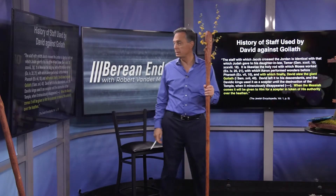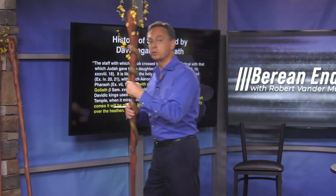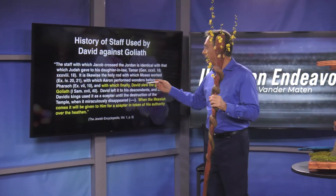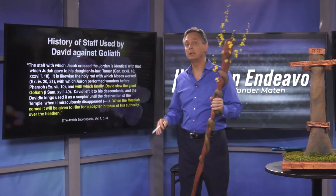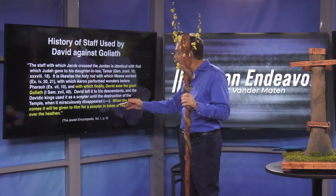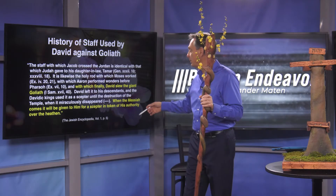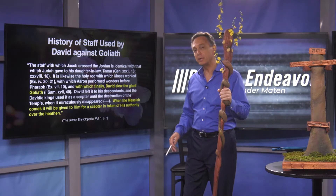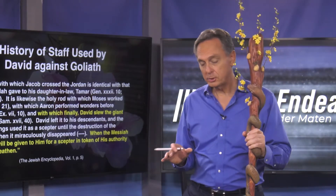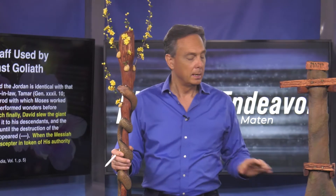The Jewish Encyclopedia says that by the time the rod got to David, it would have had the serpent in the wilderness on it. David used this staff — according to the Jewish Encyclopedia and rabbinical commentary — when he slew the giant Goliath. It also says that when the Messiah comes, it will be given to him as a scepter in token of his authority over the heathen. Remember, the king was entrusted with the preservation of this rod.